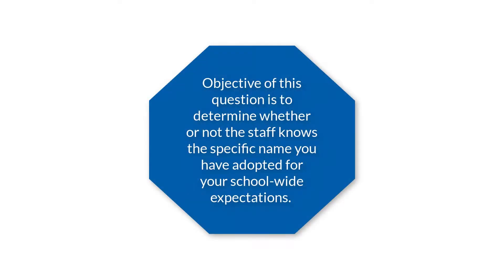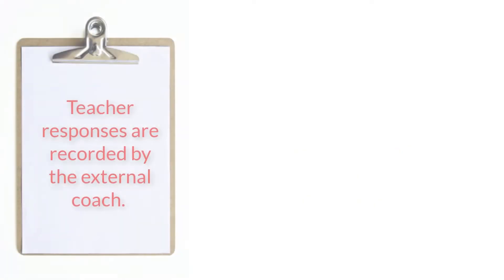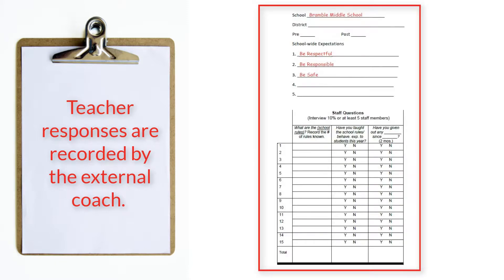The objective of this question is to determine whether or not the staff knows the specific name adopted for the school-wide expectations. If the name is an acronym, they should be able to define the acronym. For example, a school uses their mascot CUBS for school rules. CUBS stands for: come to school, use responsibility, be respectful, and safety first. The teacher Ms. O'Reilly's responses are recorded by the external coach Mike Morrow on the interview and observation form. Specifically, this should be the number of expectations the staff member was able to name.